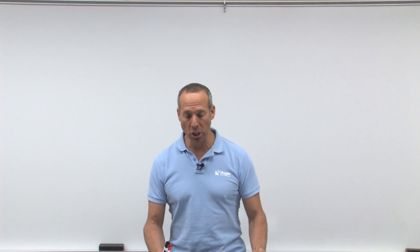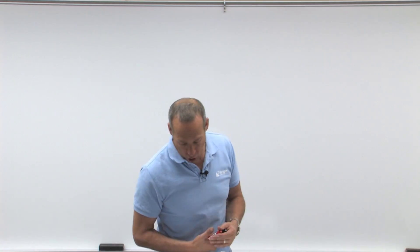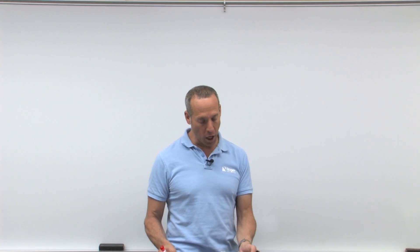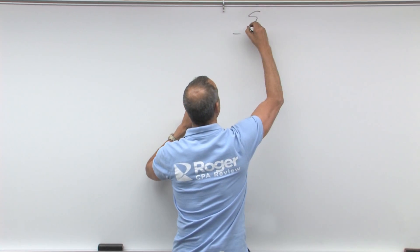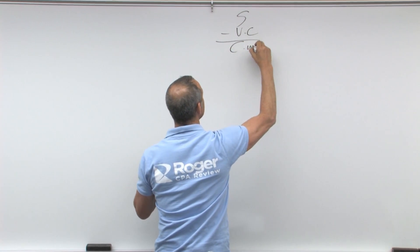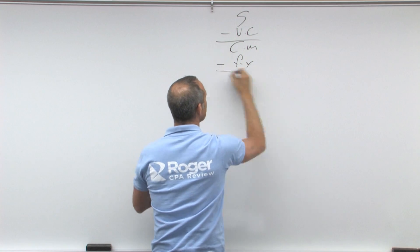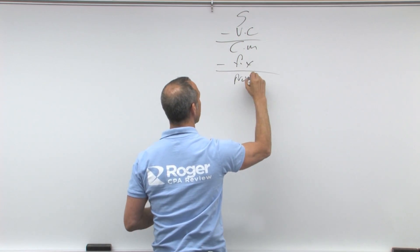Now in doing this, we are not looking at a GAAP income statement. We're looking at a contribution margin income statement. Remember what a contribution margin income statement looked like? It was sales minus variable cost is contribution margin minus fixed cost equals your profit.